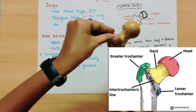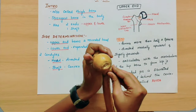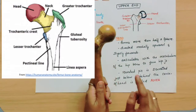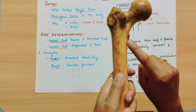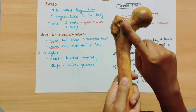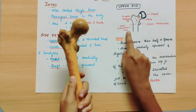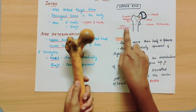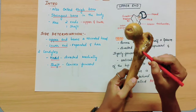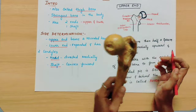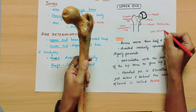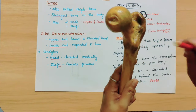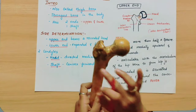This is the greater trochanter. If you look at the femur, there is also a lesser trochanter. So greater trochanter and lesser trochanter — you can see both here. The two trochanters are on the anterior surface, and you can feel a line going between these two trochanters called the intertrochanteric line. On the posterior side, the corresponding ridge connecting the two trochanters is called the intertrochanteric crest.